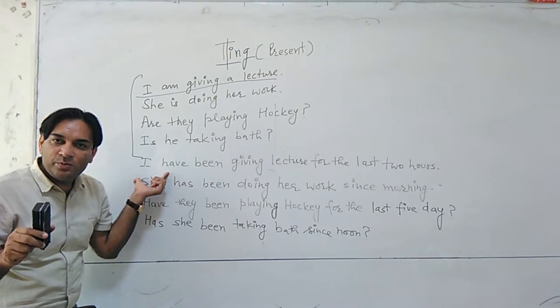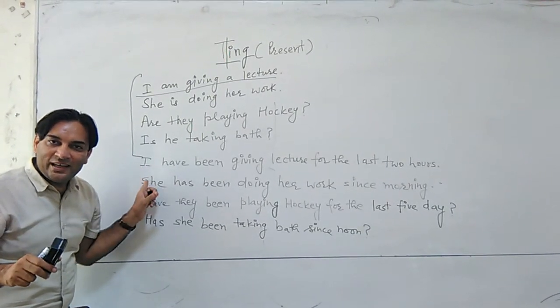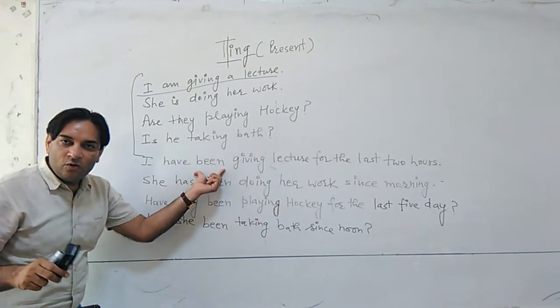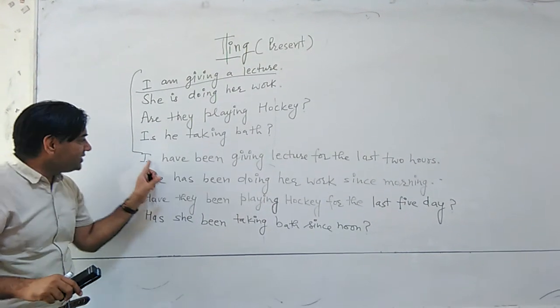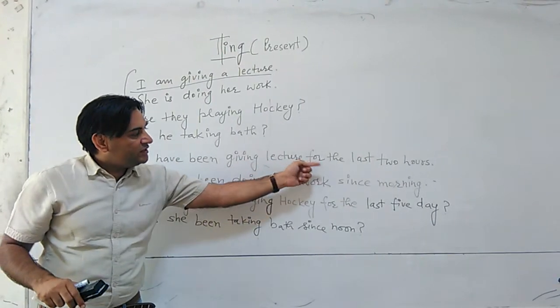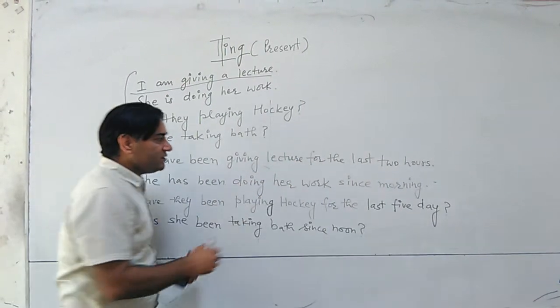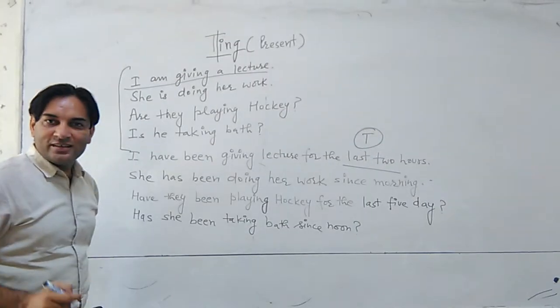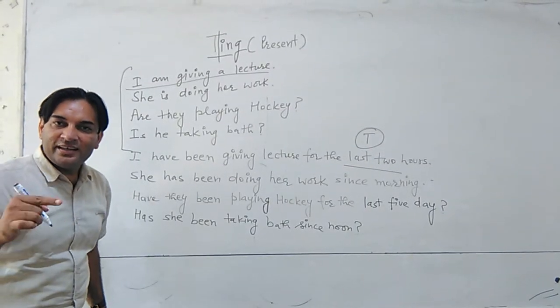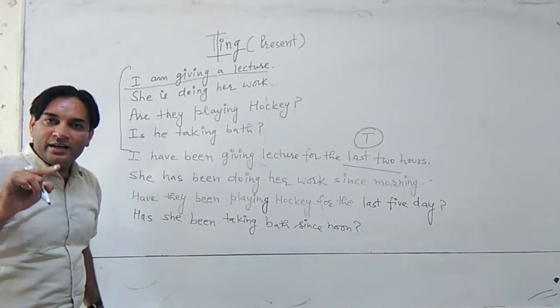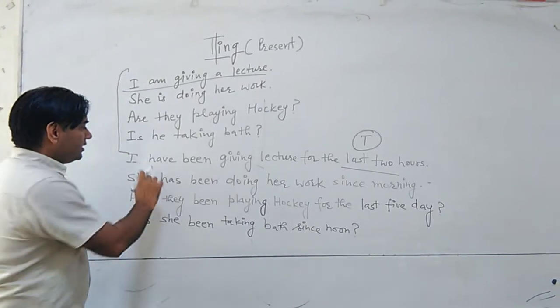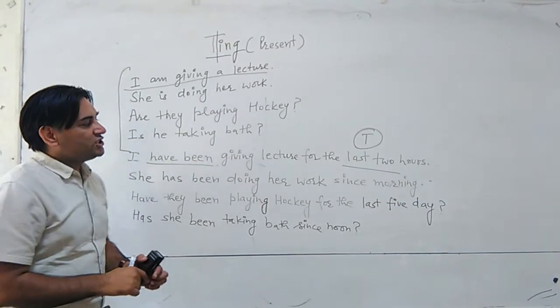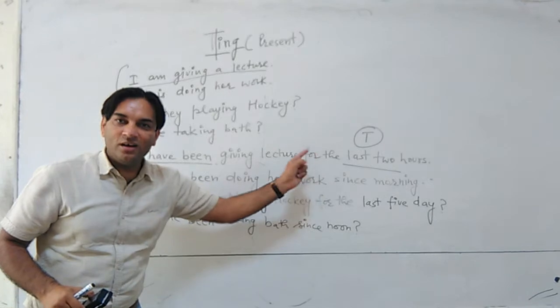You have to add either has been or have been while telling. While telling, it will be in the middle. While asking will be in the beginning. I have been giving lecture for the last two hours. What I have done? I am having time between. The action will be told like this. I have been giving lecture for the last two hours.